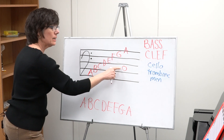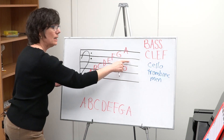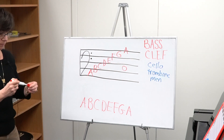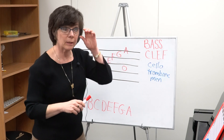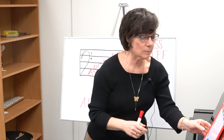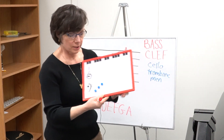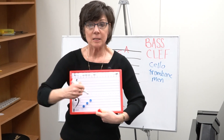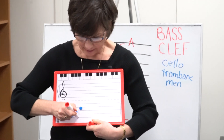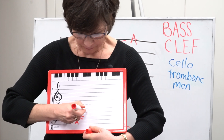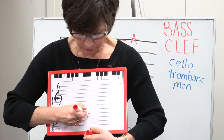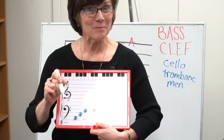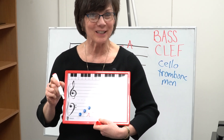A, B, C, D, E, F, G, A — I just count my way up. Another quick way to remember that the spaces start down here with the letter A: it spells a word. The spaces — A, C, E — spell the word 'ace.' And you too can be an ace at the bass clef.